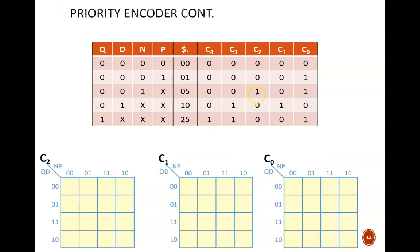C2 is high only when Q equals 0, D equals 0, and N equals 1. This zooms us in to only these two squares on the K map. You can see this is where Q equals 0, D equals 0, and N equals 1.